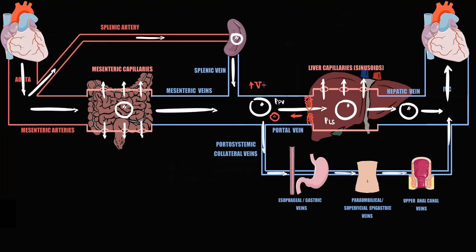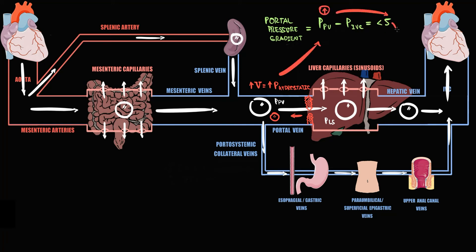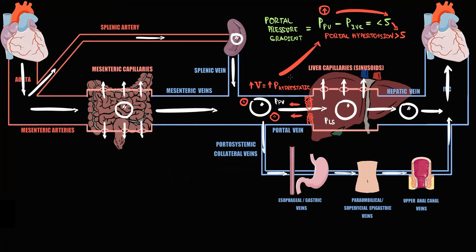With the increase in fluid volume inside the vessel, hydrostatic pressure inside the vessel increases. An increase in portal venous pressure with a portal pressure gradient higher than 5 is called portal hypertension — so portal hypertension develops. With time, due to thrombosis, even more blood accumulates inside the portal vein. Increasing blood volume causes increasing hydrostatic pressure, so portal hypertension becomes even more severe, and the portal pressure gradient now becomes greater than 10.